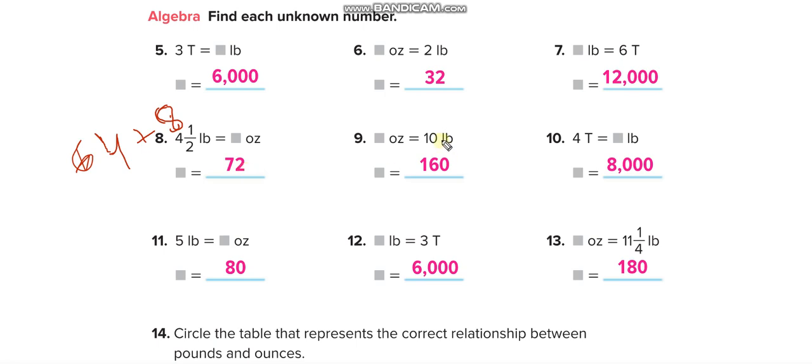Next problems: 10 pounds — 10 times 16. 4 tons — 4 times two thousand. 5 pounds — 5 times 16. 3 tons — 3 times two thousand.